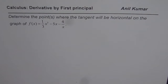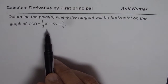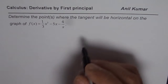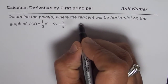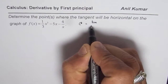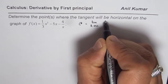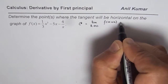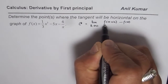I am Anil Kumar sharing with you a very popular question from calculus. The question is: determine the points where the tangent will be horizontal on the graph of f(x) = (1/3)x³ - 5x - 4/x. We will try to do this using first principles — the very basic definition of limits — which is instantaneous rate of change, written as the limit as h approaches 0 of [f(a+h) - f(a)] / h.